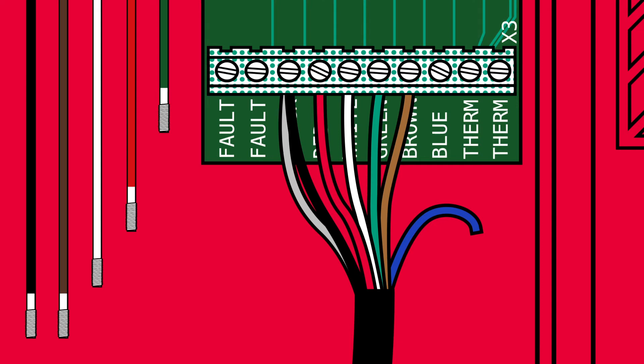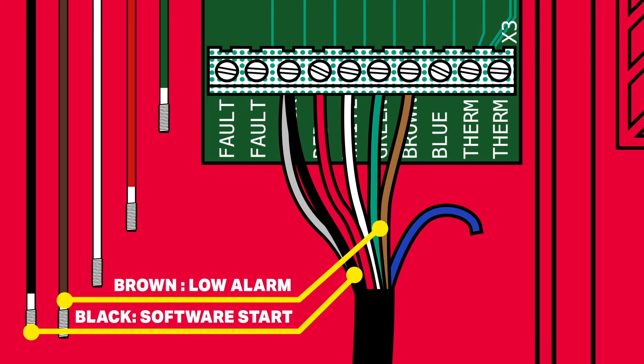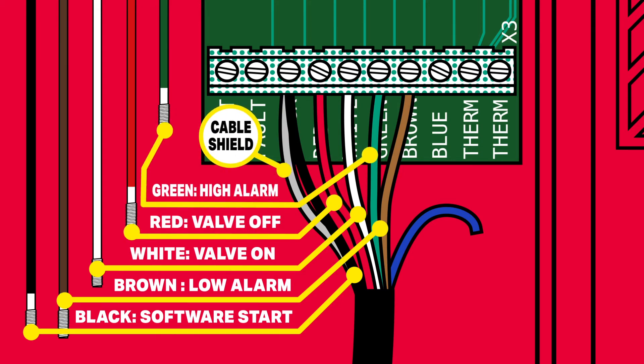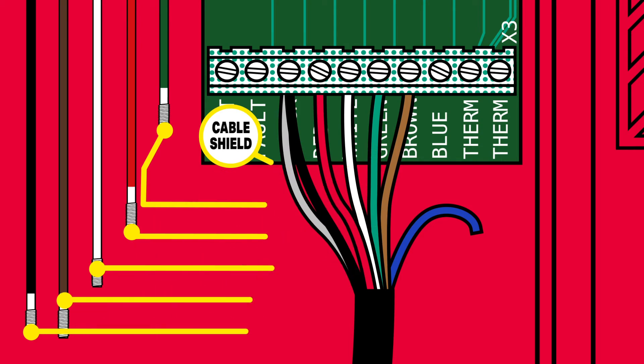From the longest rod to the shortest, the black is the software start switch and needs to be long or longer than the brown rod. The brown is the low alarm. The white turns the valve on. The red turns the valve off. And the green is the high alarm. The bare wire cable shield connects in with the black sensor wire.